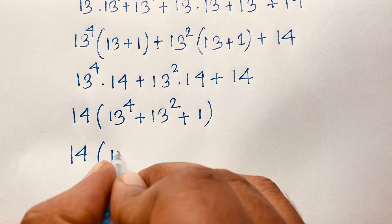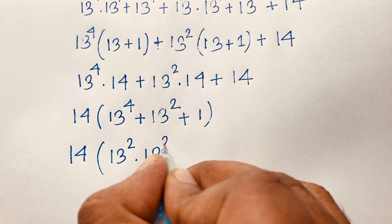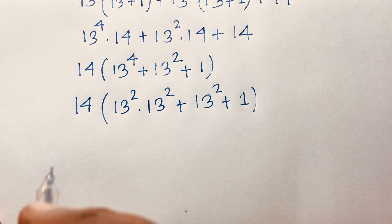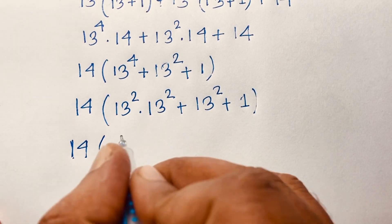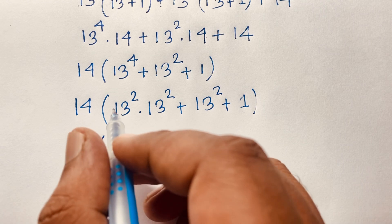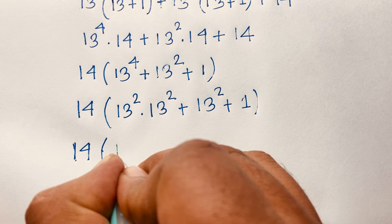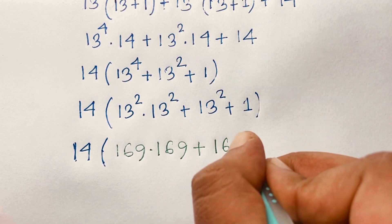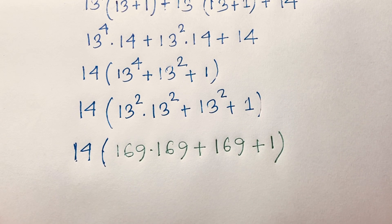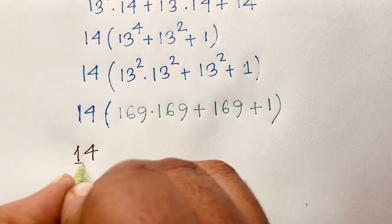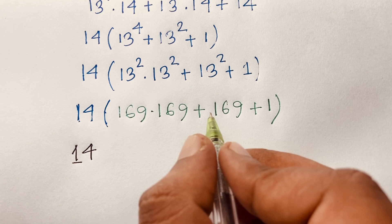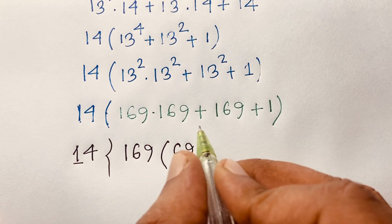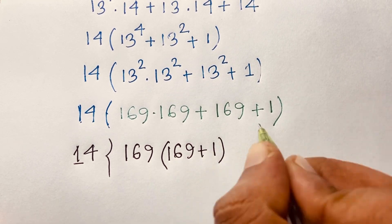Now 13 power 4 equals 13 power 2 times 13 power 2, and 13 power 2 plus 1. So we have 14 times (13 power 2 times 13 power 2 plus 13 power 2 plus 1). Since 13 power 2 equals 169, that is common. Factoring gives 169 times (169 plus 1) plus 1, which is 169 times 170 plus 1.